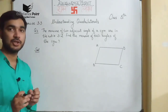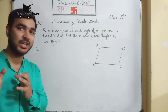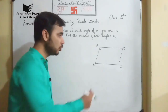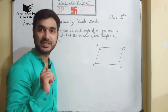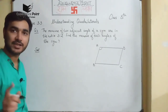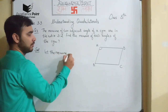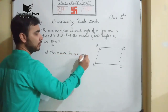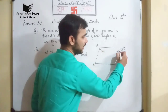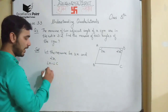In question number five, the measure of two adjacent angles of a parallelogram are in the ratio 3:2. It is talking about adjacent angles, not opposite angles. So let one angle be A and its adjacent angle be D. Since ratios are not exact values, let the measures be 3x and 2x respectively.